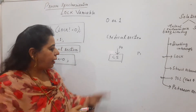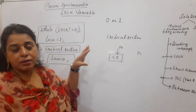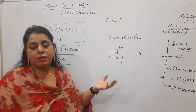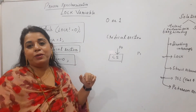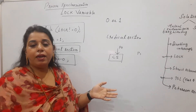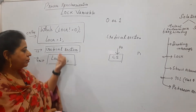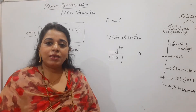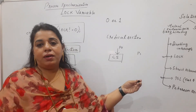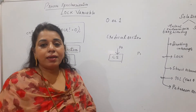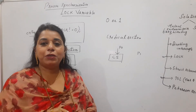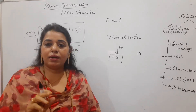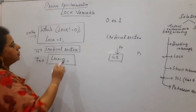Before a process tries to enter the critical section it executes certain instructions — informing other processes of its intent to enter. It's like taking permission, entering the critical section, and once it comes out, executing an instruction to indicate it has left. Every solution must mandatorily satisfy two conditions: mutual exclusion and progress. The third condition, bounded wait, is optional.